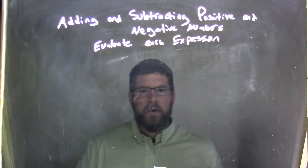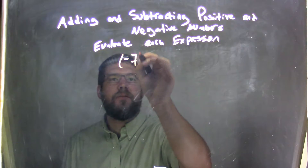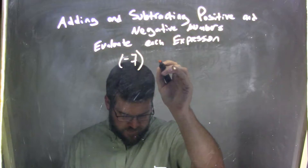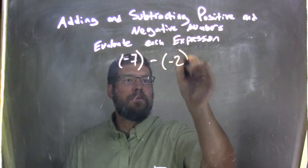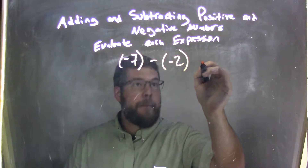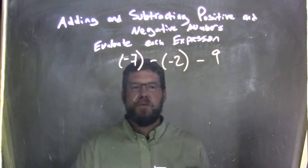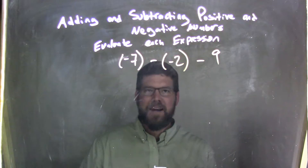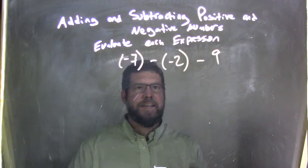So if I was given this expression: negative 7 minus a negative 2 minus 9. So negative 7 minus a negative 2 minus 9.